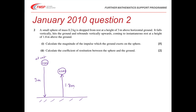We need to calculate the magnitude of the impulse which the ground exerts on the sphere. That means I want change in momentum. I'll define upwards as the positive direction. I need to know the speed when the ball hits the ground and the speed when it bounces back up. I'll label position A where it's dropped from rest, B when it hits the ground with speed V1, C when the ball rebounds with speed V2, and D when it's back at 1.8 metres and at rest again.